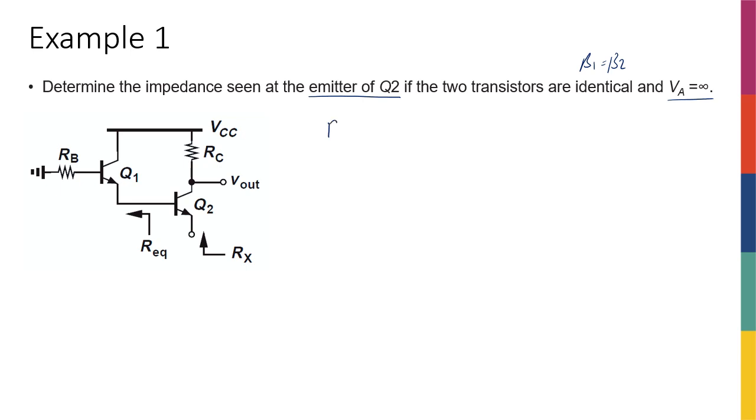So if I want to say what is Rx, I know that looking into the emitter of a bipolar transistor, I'm going to see 1 over Gm, and then whatever resistance in the base, so Rb2. I'm going to call that the resistance in the base of Q2, so all resistors in the base of Q2.